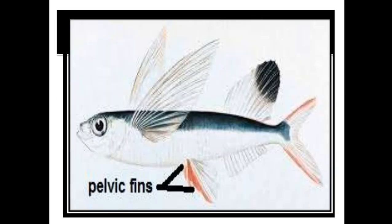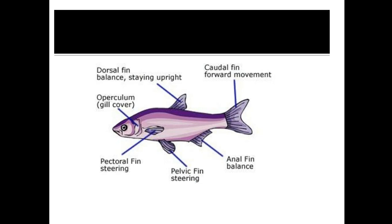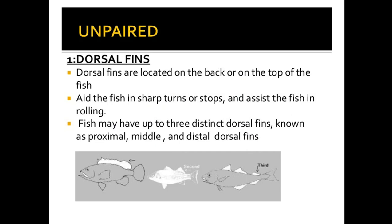So pelvic fin position can be abdominal, thoracic (below the pectoral fins), jugular (under the gills), or mental (under the eyes or chin — very rare). These are the two paired fins: pectoral and pelvic. Now there are three unpaired fins: dorsal, anal, and caudal fins.